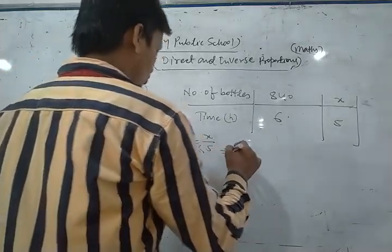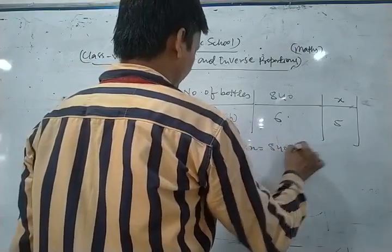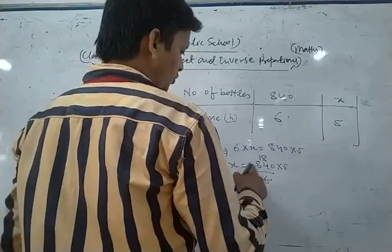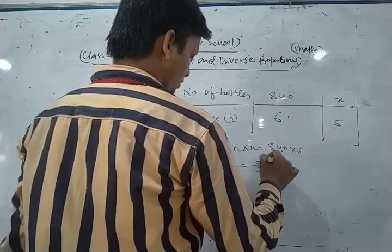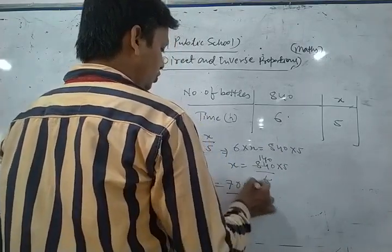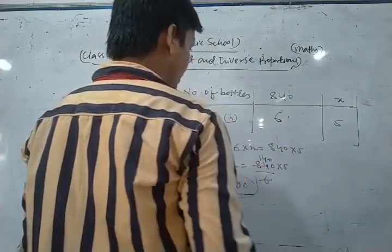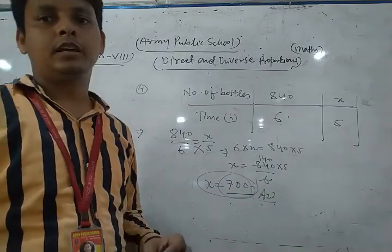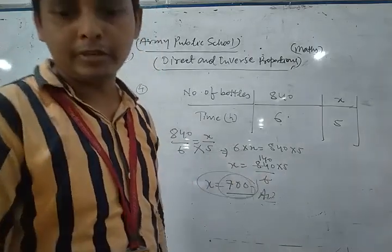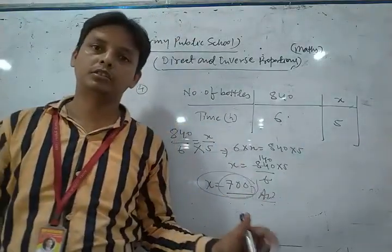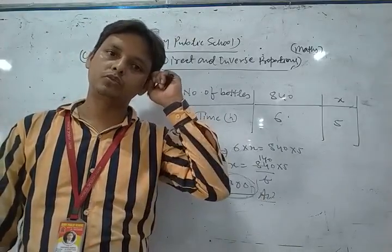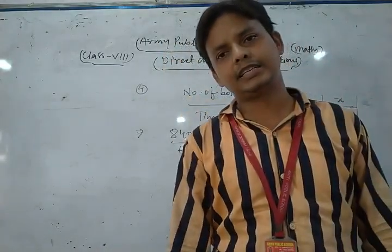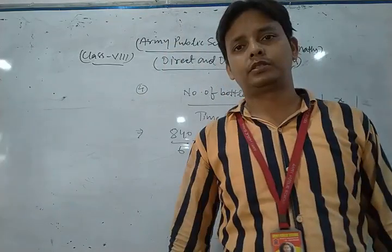We write 840 upon 6 equals x upon 5. Cross-multiplying: 6 times x equals 840 times 5, so x equals 840 into 5 upon 6, which gives 700. So 700 bottles are filled in 5 hours.